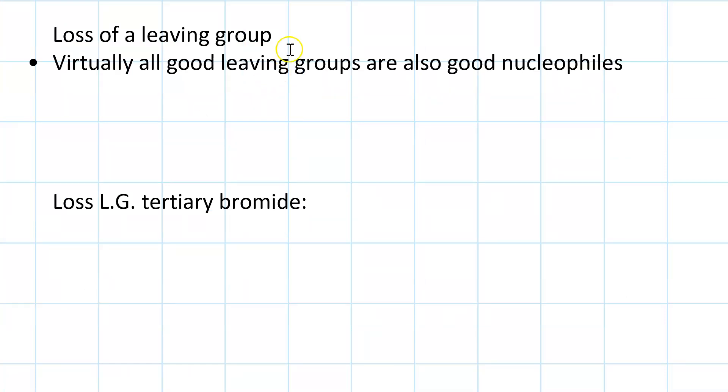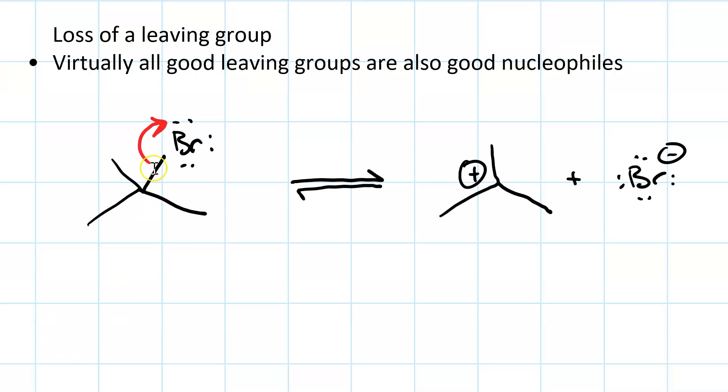Loss of a leaving group, on the other hand, is pretty much always reversible, because anything that's a good leaving group is also a good nucleophile. Here I've got a bromide leaving from a tertiary position to give a tertiary carbocation and a bromide ion. The bromide ion is a great nucleophile and it can just as soon perform nucleophilic attack and drive the reaction backward. Reversible.